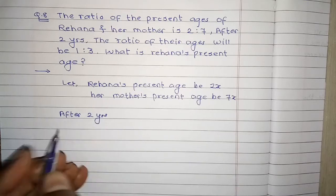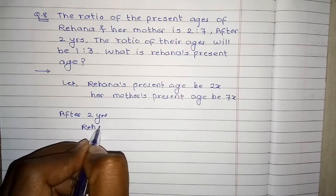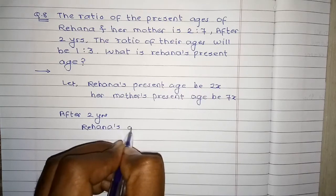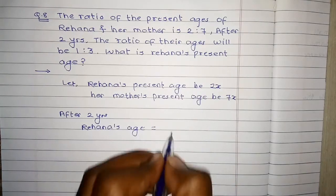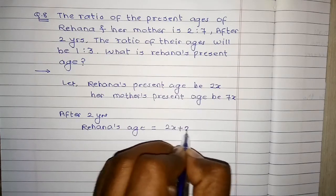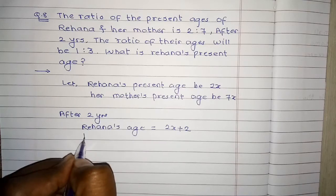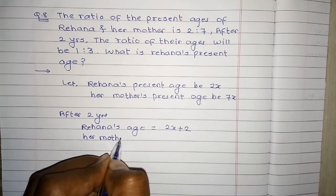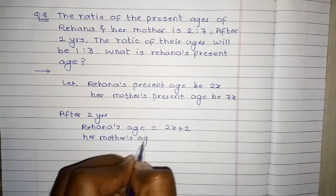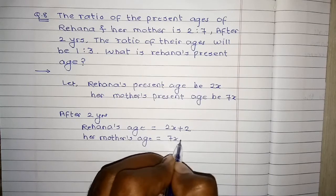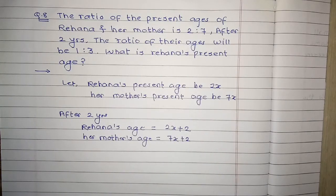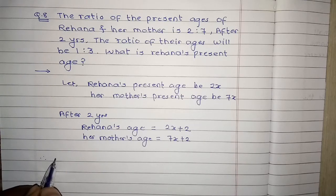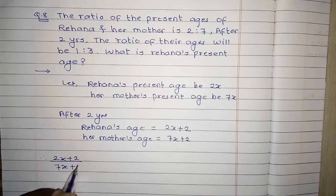After 2 years, रेहाना की age क्या हो जाएगी? 2x plus 2. And her mother's age क्या हो जाएगी? 7x plus 2. उनके present ages के साथ 2 add हो जाएगा। So therefore, अब ratio क्या बनता है: 2x plus 2 upon 7x plus 2 equals to 1 to 3.